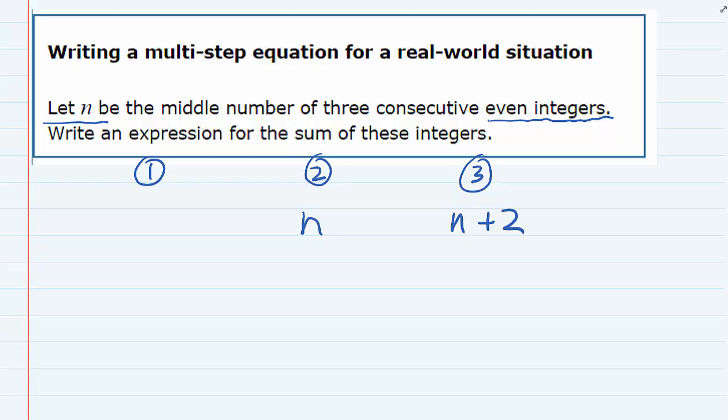It's also even and it's the one that comes before n. So instead of adding 2 to n, we would subtract 2 from n.